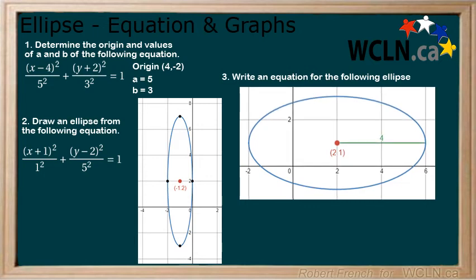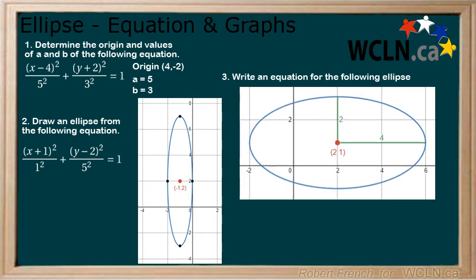Now, count out from the origin to the right edge to get 4, which is our value for a. We could have also counted to the left to get this value. Next, count up from the origin to get the value of 2 for b.